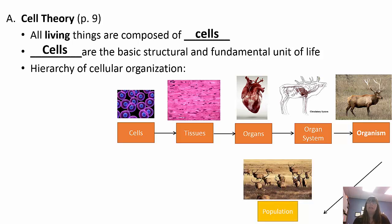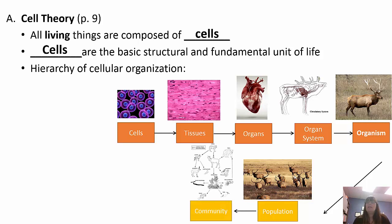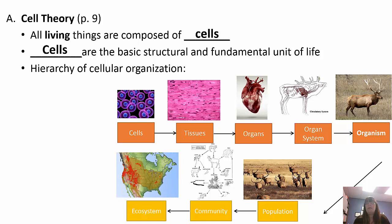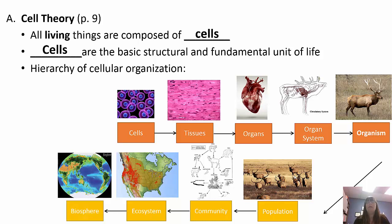Organisms form populations — a population is a group of the same species. Populations then form communities, which are groups of different species. If you're in a room with only other people, you are a population. Once you go outside and you're around grass, trees, and bugs, you're in a community. Communities form ecosystems because ecosystems take into account the abiotic factors, or non-living factors, like temperature, precipitation, and wind. And then we have the biosphere, which is the planet.